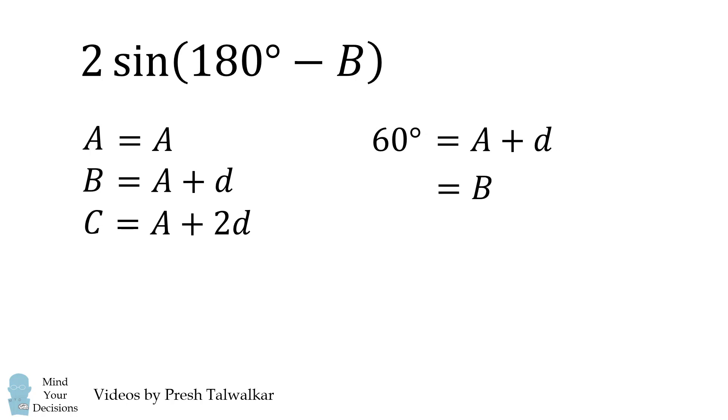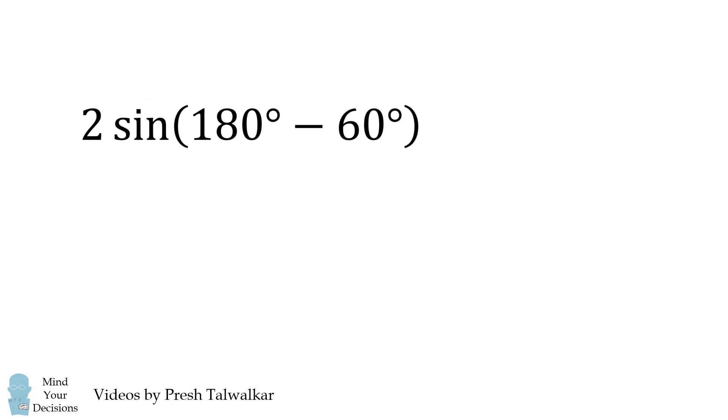And A plus D is equal to angle B. We substitute that in, and we have 2 times the sine of 180 degrees minus 60 degrees, which simplifies to be 120 degrees, and that evaluates to be 2 multiplied by the square root of 3 all over 2. The 2s cancel, and we get the answer of the square root of 3. Wow!